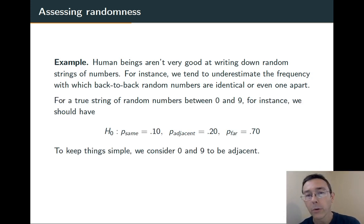For example, if we're just trying to write down a string of digits between 0 and 9 at random, we tend to seldom write down the same digit over and over again, even though the probability of the same digit occurring twice in a row is 1 in 10.